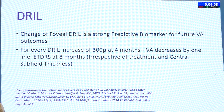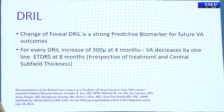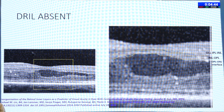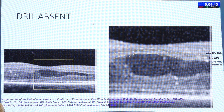Change in DRIL extent is a strong predictive biomarker for future visual acuity outcomes, independent of central subfield thickness. For every DRIL increase of 300 microns at four months, visual acuity decreases by one line at eight months, irrespective of treatment.